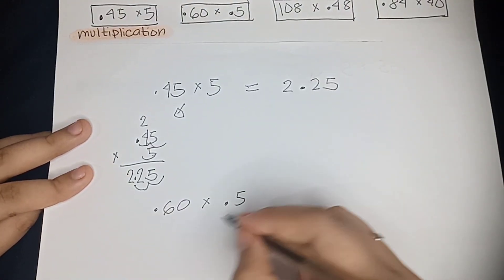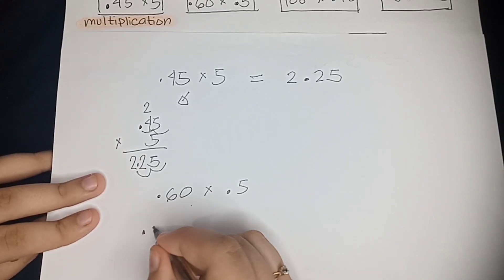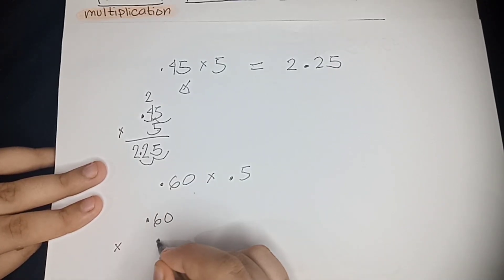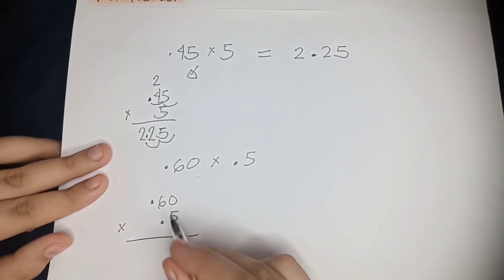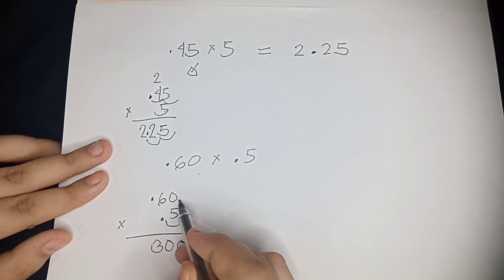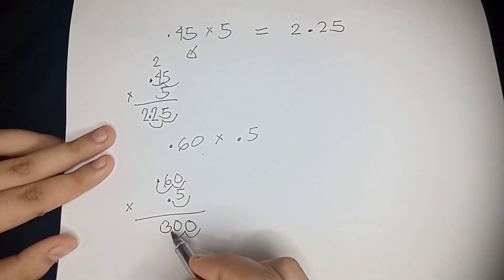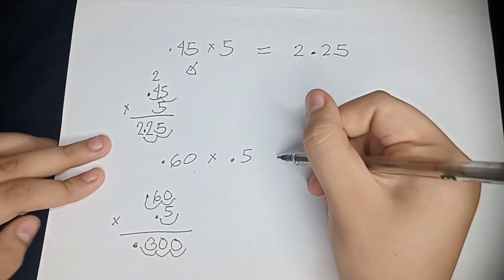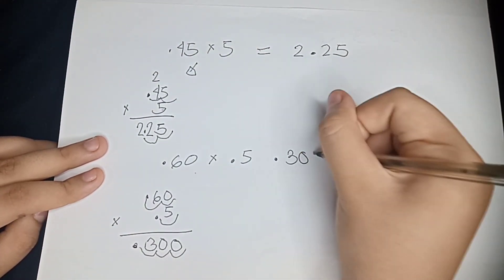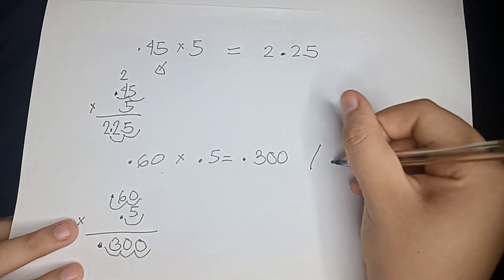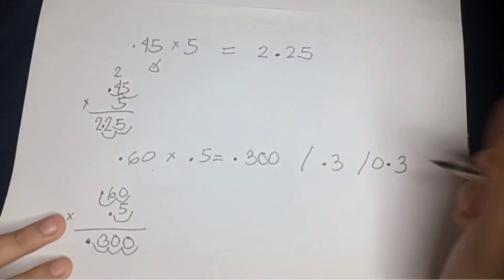So now we are going to move on to 0.60 multiplied by 0.5. These two numbers are both decimals, which makes this more understandable. So 5 multiplied by 0 equals 0, and 5 multiplied by 6 equals 30. So we're going to count the numbers to the right side of the decimal, which is 3 movements altogether. So we're going to do that to the sum, and we get 0.300, which you can write in many ways, such as 0.300, 0.3, or 0.03. All of these answers are basically correct, but there are two answers which teachers accept more, which is 0.3 and 0.03, because they look more simplified than 0.300.